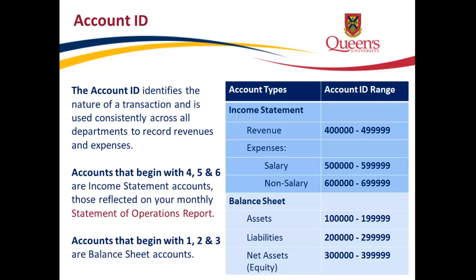The account ID identifies the nature of a transaction and is used consistently across all departments to record revenues and expenses. Accounts that begin with 4, 5, and 6 are income statement accounts — those reflected on your monthly statement of operations report. Accounts that begin with 1, 2, and 3 are balance sheet accounts.